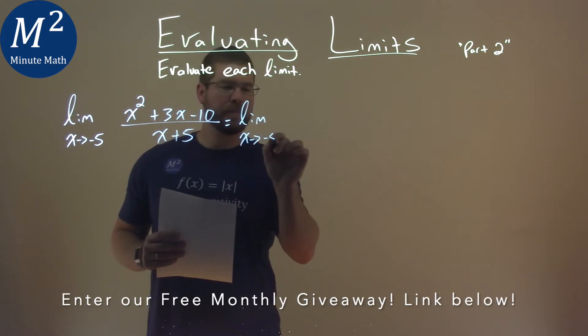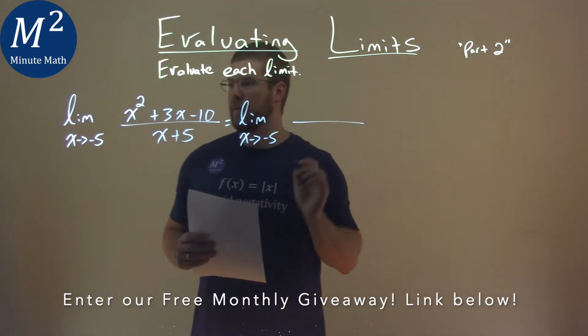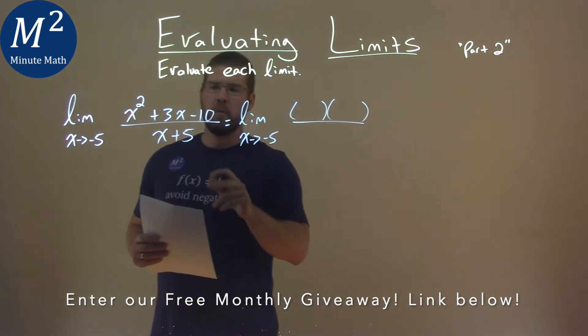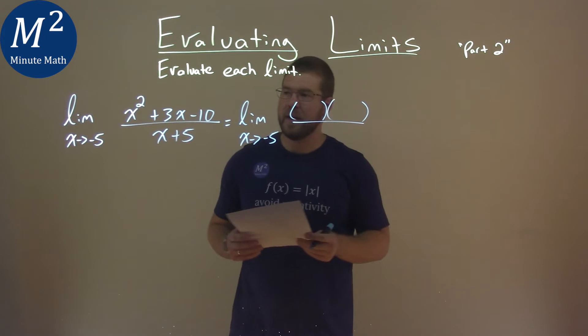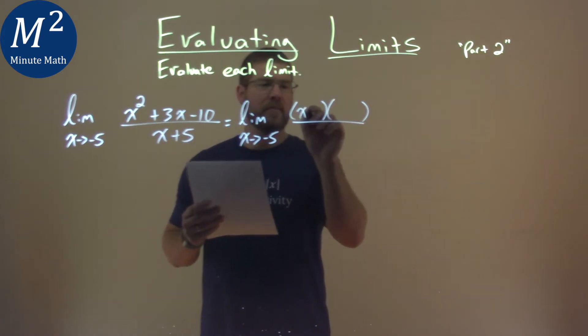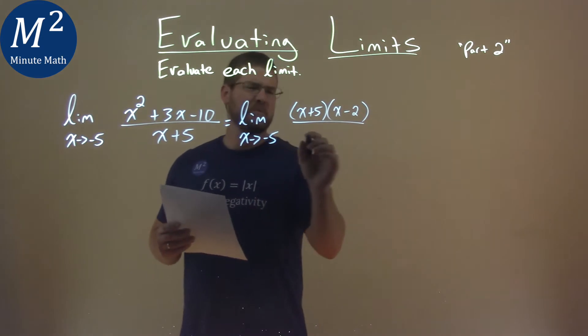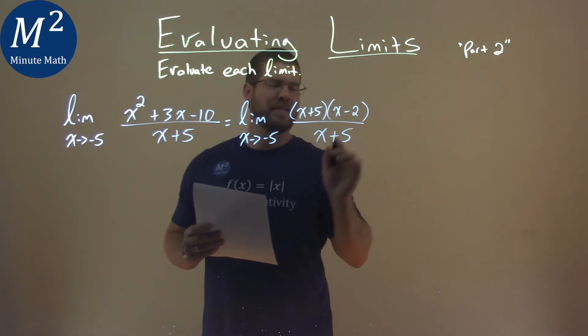Let's rewrite the beginning part. Can we factor the numerator? What two numbers multiply to be negative 10 but add to be positive 3? That's a positive 5 and a minus 2, which is good because we want the x plus 5 to cancel out.